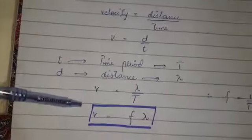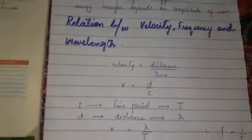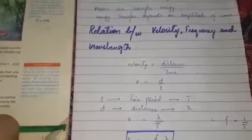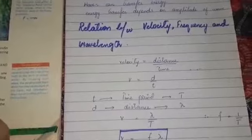If we look at the value of 1 over t as frequency, we get velocity equals f times lambda. This is an important short question.